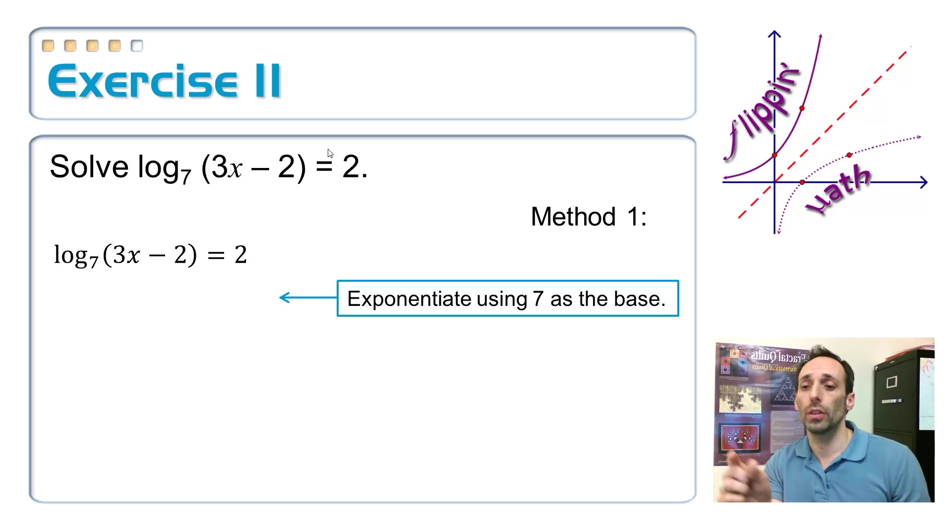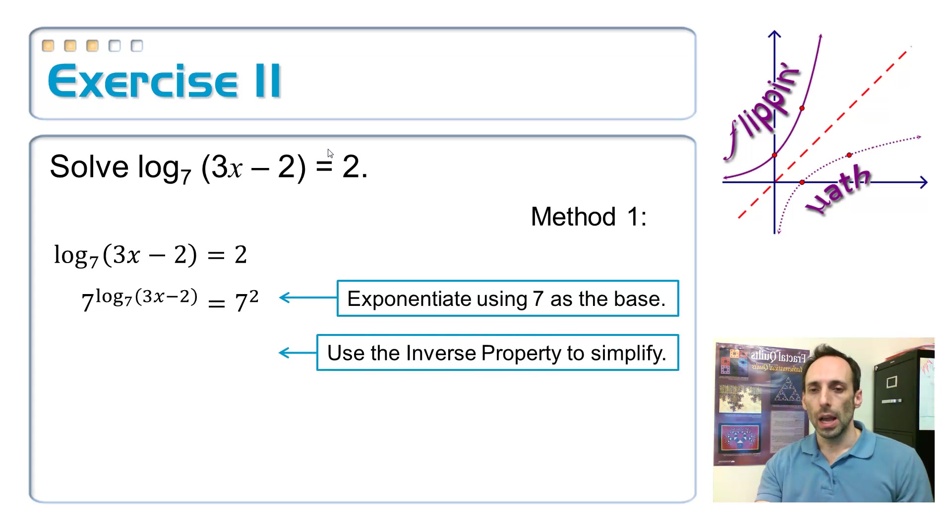And the base that I want to use is 7. So, the equation that's right over there, the log base 7 of 3x minus 2, that's going to become the exponent on the 7. And the 2 on the right-hand side is also going to become the exponent on the 7. I do that because on the left-hand side, exponentials and logarithms cancel each other out. These things are inverses of each other.